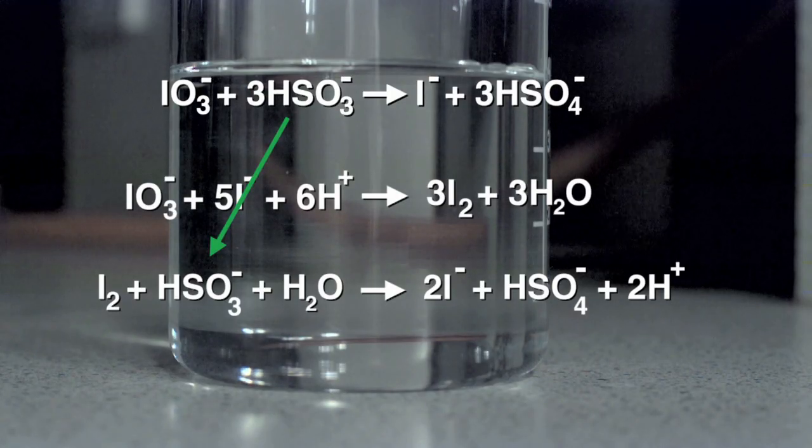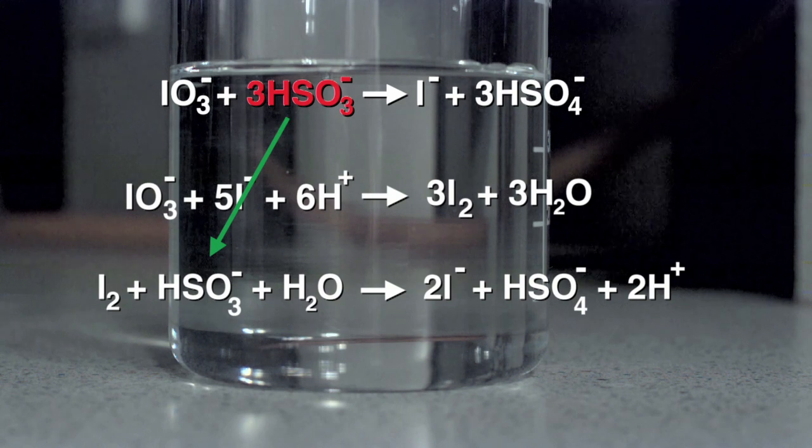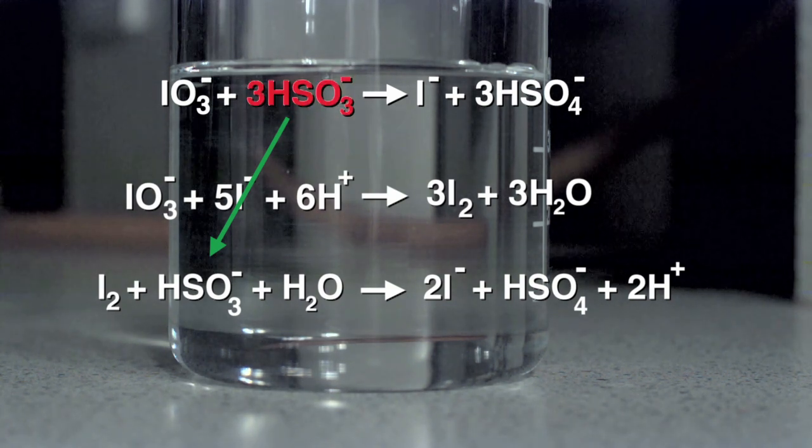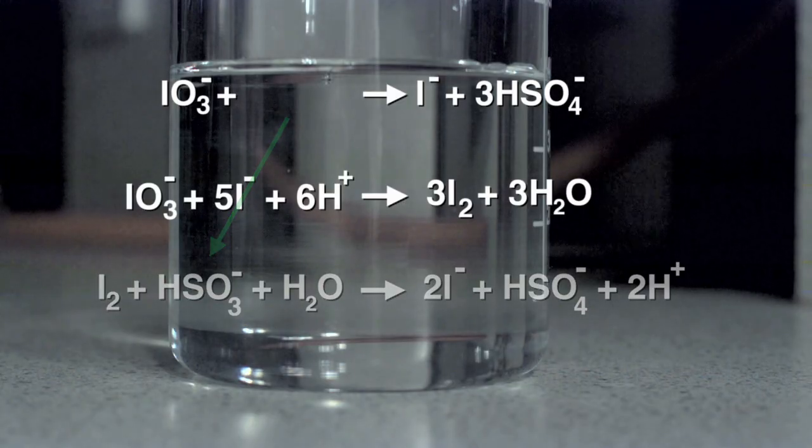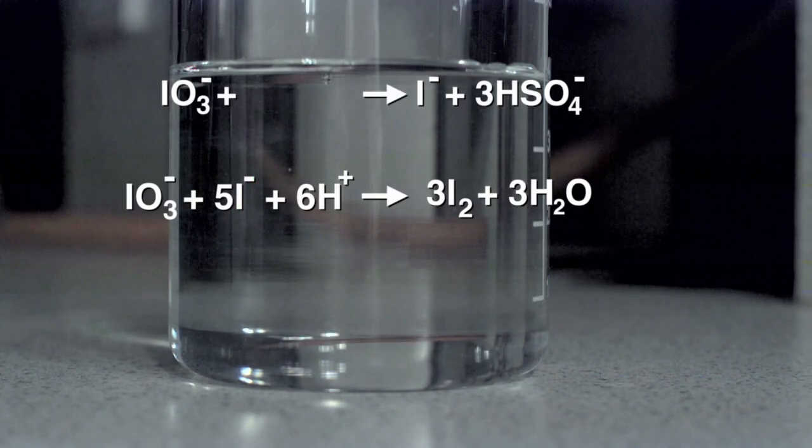And this goes on with these different reactions. And then you arrange the concentration so the bisulphite runs out before the iodate. And as soon as it runs out, the iodate converts some of the iodide to iodine. You form I3- and it goes blue.